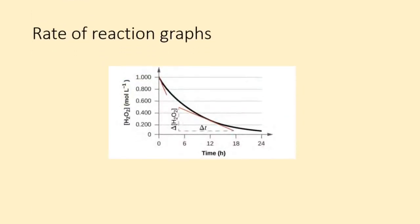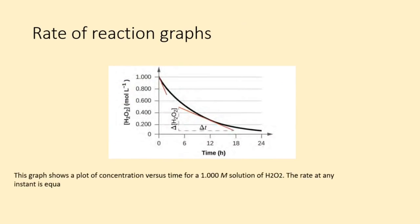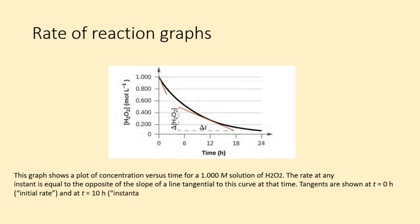Let's analyze rates of reaction in the context of a graphical plot shown below. This graph shows a plot of concentration versus time for a 1.00 M solution of H₂O₂. The rate at any instant is equal to the opposite of the slope of a line tangential to this curve at that time. Tangents are shown at T equals zero hours, the initial rate, and at T equals 10 hours, the instantaneous rate at that particular time.